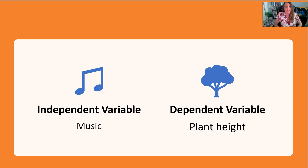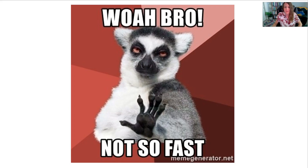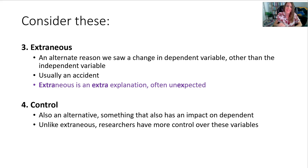Say hypothetically that the plant in the music room grows an inch taller than the plant in the no-music room during the study period. Does that mean classical music causes plants to grow faster? Not so fast — we need to consider the other two types of variables in the 'I Don't Eat Cows' scenario: extraneous and control.